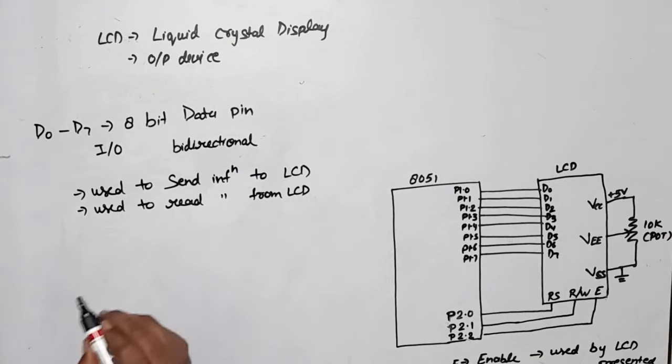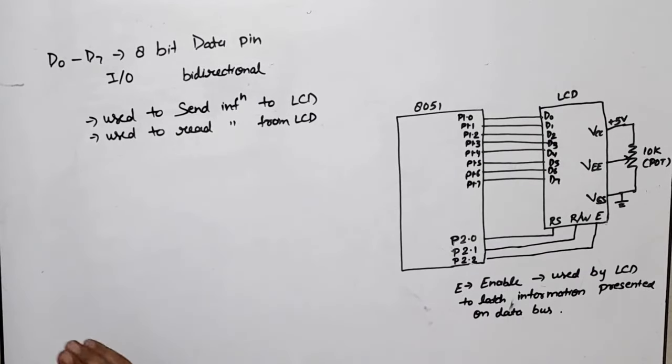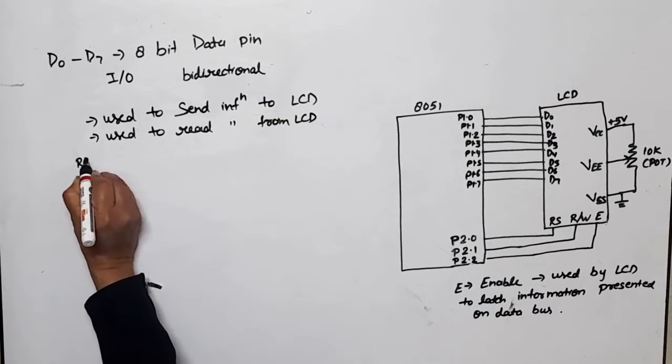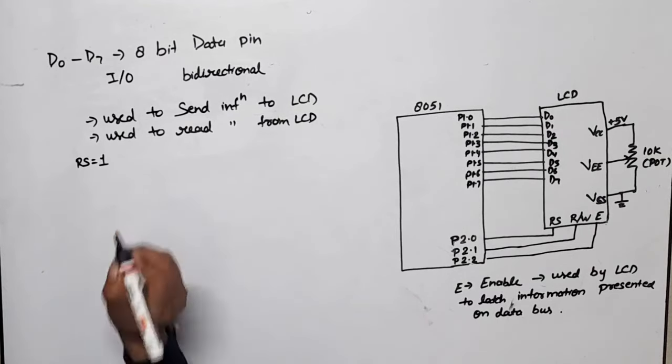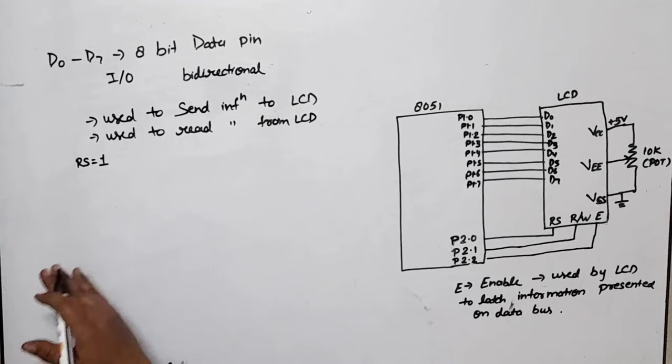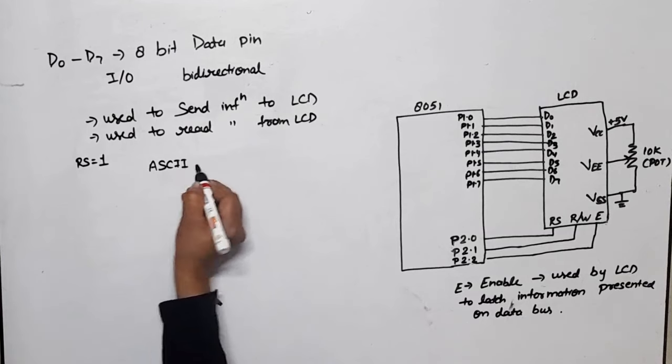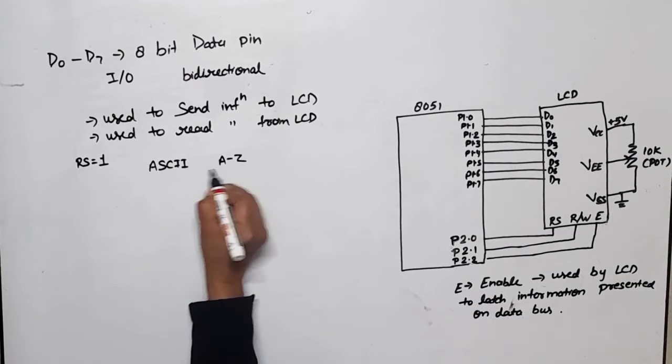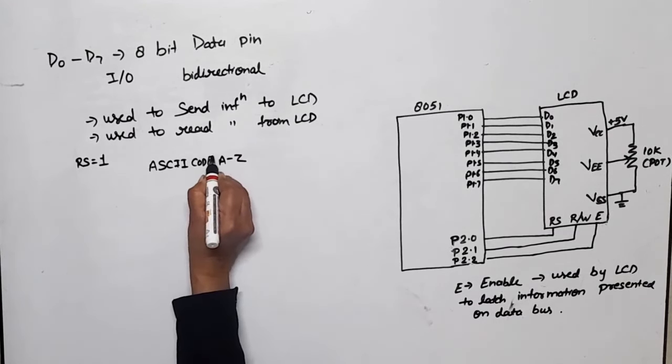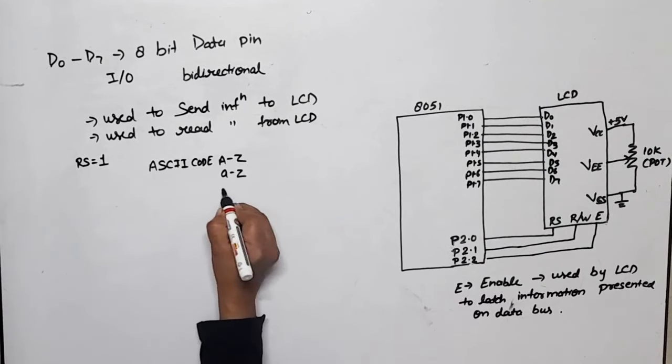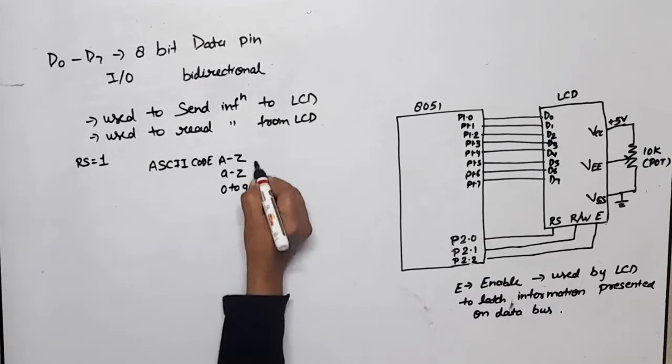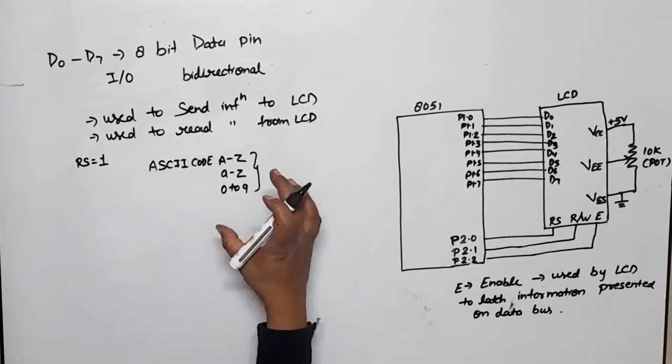Now if we want to send characters or numbers to the LCD, first of all our RS should be selected as 1, meaning we need to send through data register. The characters or numbers sent will be in single quotes: 'A' to 'Z' in caps, 'a' to 'z' in small, and '0' to '9' for numbers. For these characters and numbers, we use single quotes. In that case, RS should equal 1.